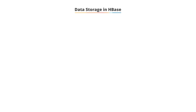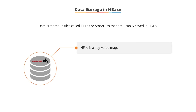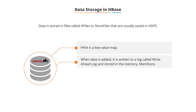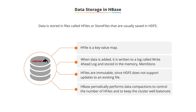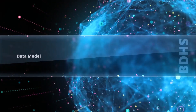Data storage in HBase. Data is stored in files called HFiles or store files, that are usually saved in HDFS. An HFile is a key-value map generated due to the MapReduce operations performed by Hadoop. When data is added, it is written to the WAL and stored in memory — this in-memory data store is called the MEMstore. HFiles are immutable, since HDFS does not support updates to an existing file. To control the number of HFiles and keep the cluster well balanced, HBase periodically performs data compactions across the HDFS cluster.